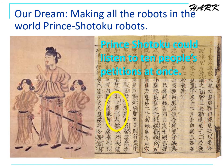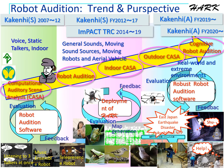Our dream is to make all robots in the world a Prince Shotoku robot. Shotoku lived about 1,300 years ago and created the first Japanese constitution consisting of 17 articles. He was legendarily said to be able to listen to 10 people's petitions at the same time and give them wise judgment. This illustrates our research activities from CASA to robot audition, indoor and outdoor scenarios, bird-song analysis, and drone audition, and now toward cognitive robot audition.